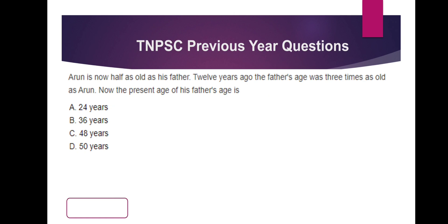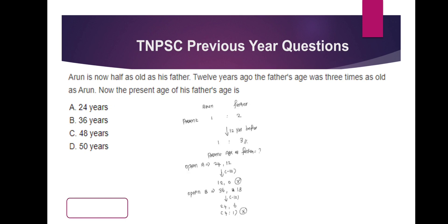Arun is now half as old as his father — the ratio is 1 to 2. Arun is now half as old as his father; that's why the father is 2 years old relative. For 12 years, his father is 3 times as old as Arun, so the ratio is 1 to 3. Now the ratio is 1 to 2. Let's look at the first option. What is the age of the father? Arun is 24 years old, Arun is 10 years old. So for 12 years, the ratio is 3 to 1. For 12 years, Arun is 0 — that's ruled out.